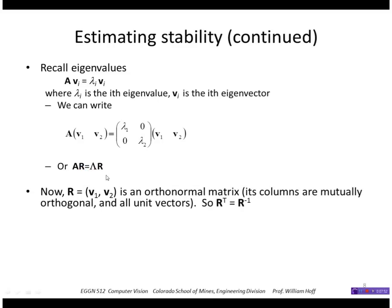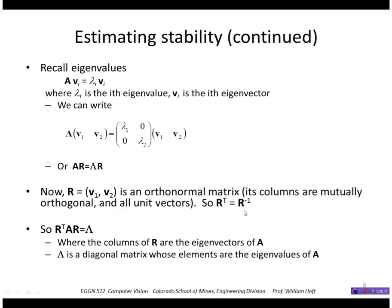Now R is an orthonormal matrix, so these eigenvectors are, we basically normalize them to unit vectors, and eigenvectors are also orthogonal. So the transpose of our matrix is equal to its inverse. I can multiply through by the inverse, or the transpose, and I get this equation here. So R transpose times A times R equals lambda.